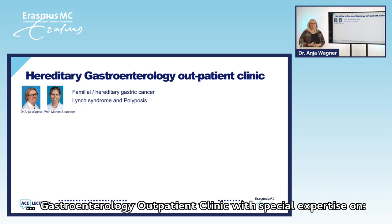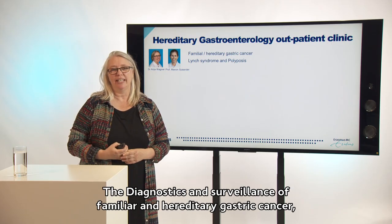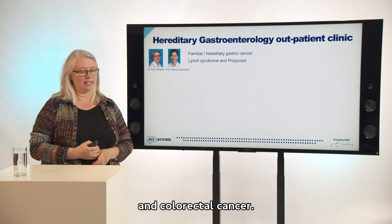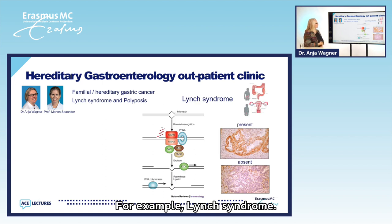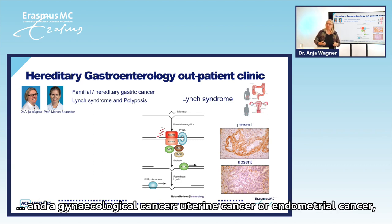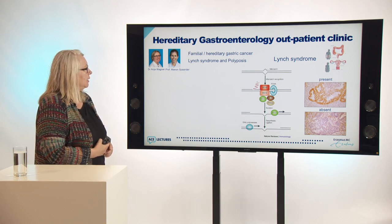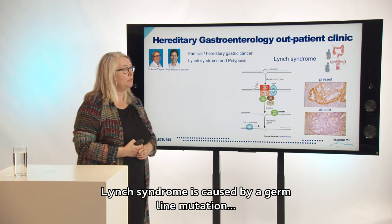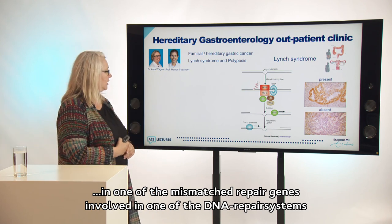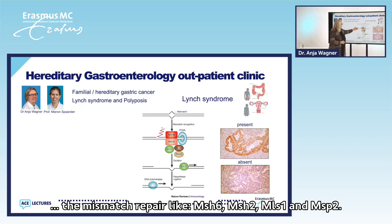Another example of the expertise in our center is the dedicated hereditary gastroenterology outpatient clinic, with special expertise on the diagnostics and surveillance of familial and hereditary gastric cancer and colorectal cancer. For example, Lynch syndrome — a predisposition for predominantly colorectal cancer and gynecological uterine cancer (endometrial cancer), but also other cancers. Lynch syndrome is caused by a germline mutation in one of the mismatch repair genes involved in the DNA mismatch repair system, such as MSH6, MSH2, MLH1, and PMS2.